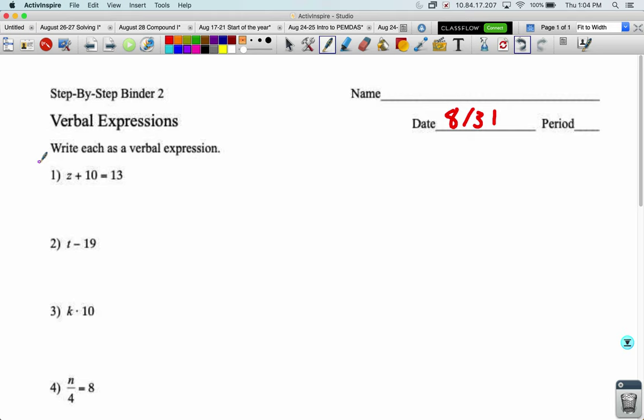So the directions say write each as a verbal expression. This could also say translate each into a verbal expression or translate from an algebraic expression into a verbal expression. The key word there is verbal. That we want to take math that we see with variables and symbols and write it like how we would say it. And specifically how we would say it with very sophisticated math language.